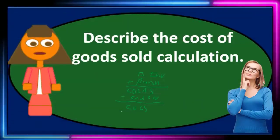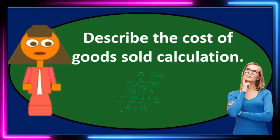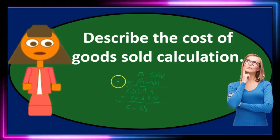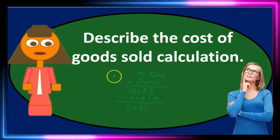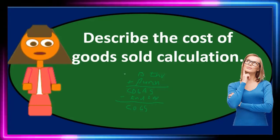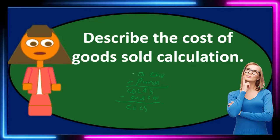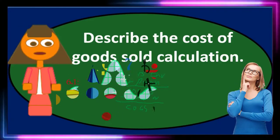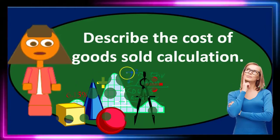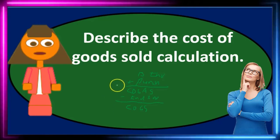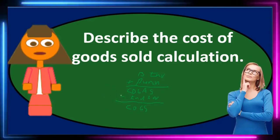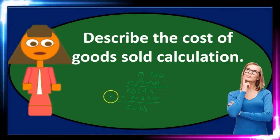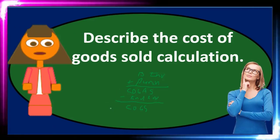The reason this formula is so important for test purposes is that questions could ask for any component within it. They might give you purchases, ending inventory, and cost of goods sold, and ask for beginning inventory. What you don't want to do is memorize a reworked formula for each component. Instead, recognize what's unknown and use algebra to solve for it. They might ask for purchases or ending inventory the same way — for any of those, just use the cost of goods sold formula to find the answer.